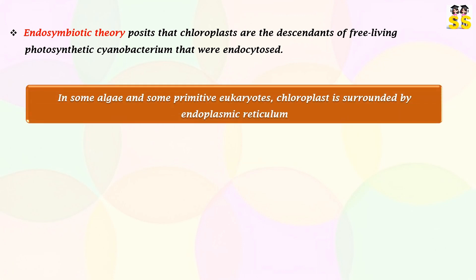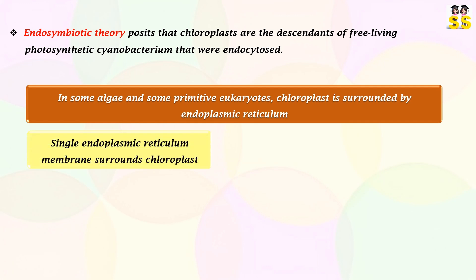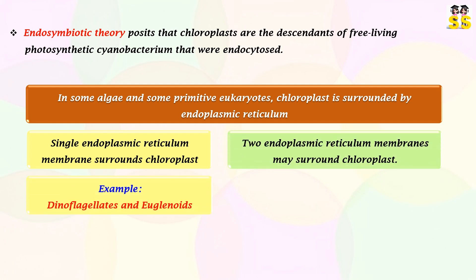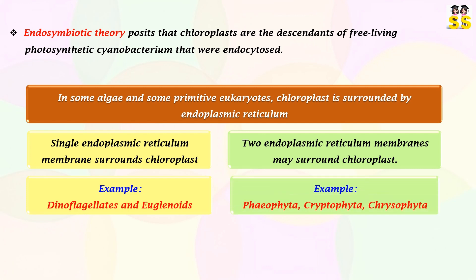Chloroplasts are surrounded by endoplasmic reticulum in some algae and some primitive eukaryotes. Chloroplasts are bounded by a single endoplasmic reticulum membrane in dinoflagellates and euglenoids. Chloroplasts bounded by two endoplasmic reticulum membranes are found in Phaeophyta, Cryptophyta, and Chrysophyta. Rubisco is the marker enzyme of chloroplast.